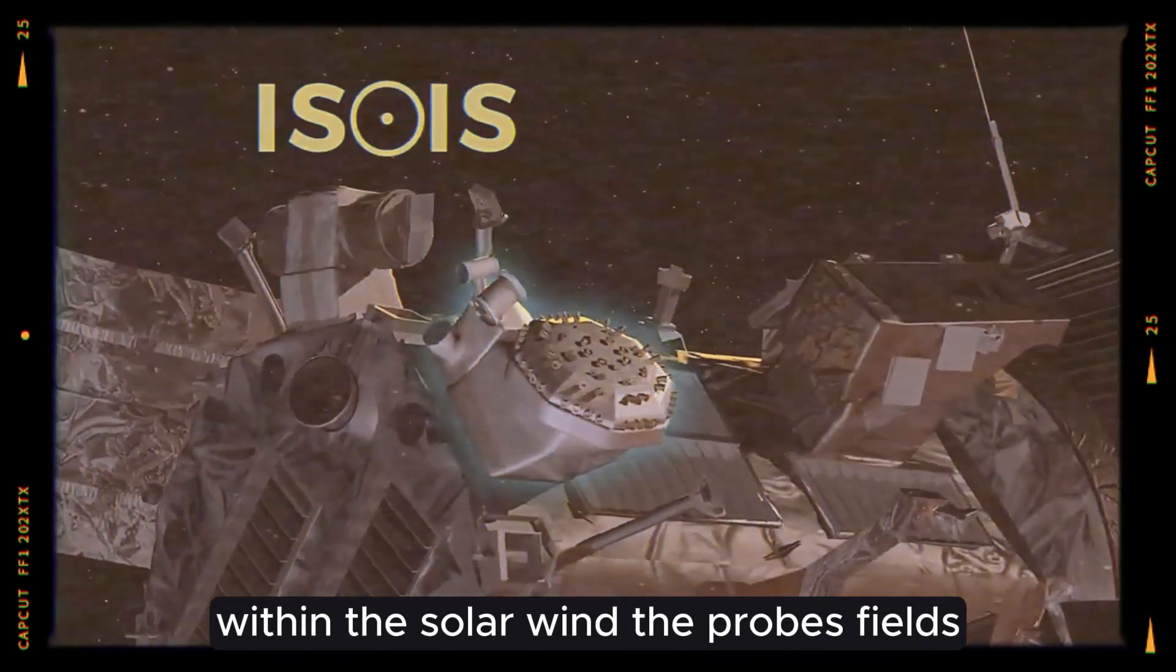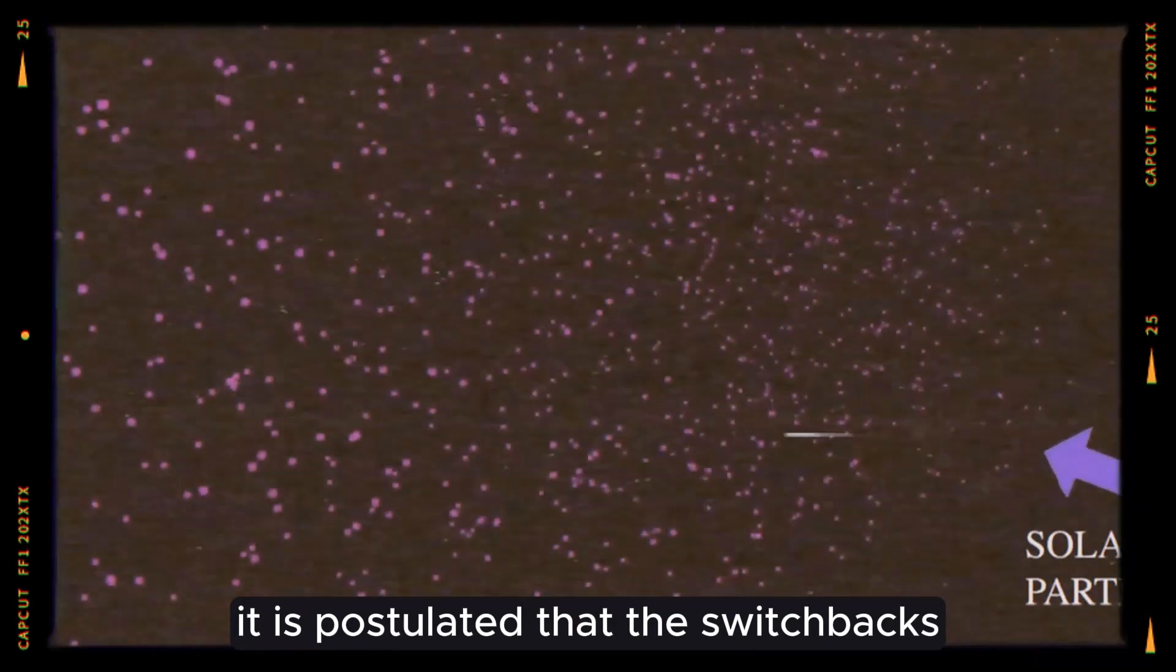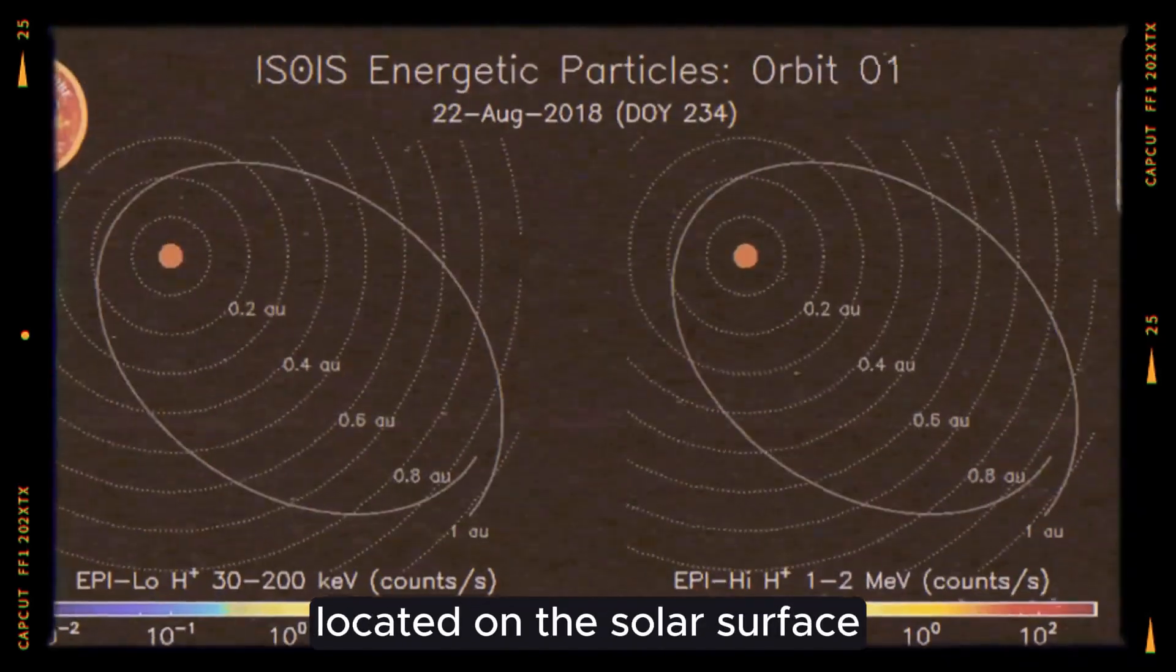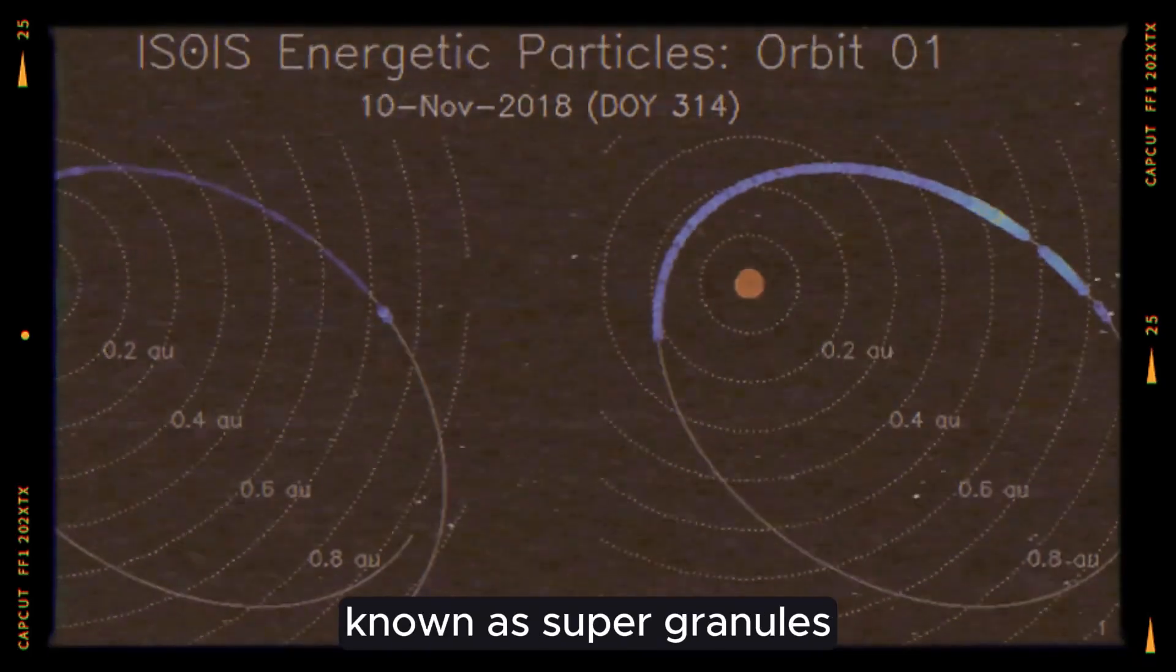The probe's fields instrument detected these swift reversals in the Sun's magnetic field. It is postulated that the switchbacks can be traced back to magnetic funnels located on the solar surface, which emerge amidst convection cell structures known as supergranules.